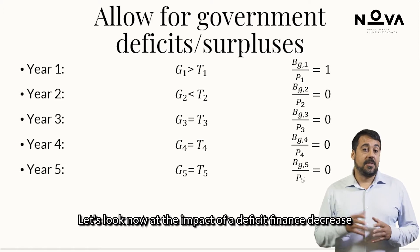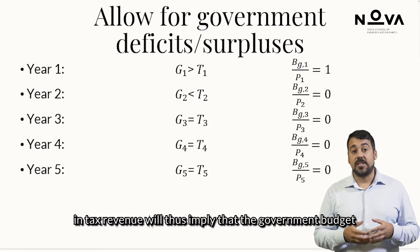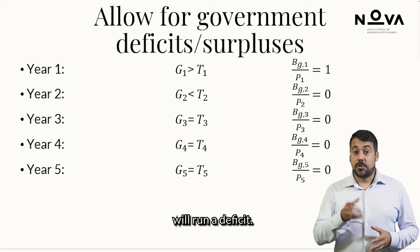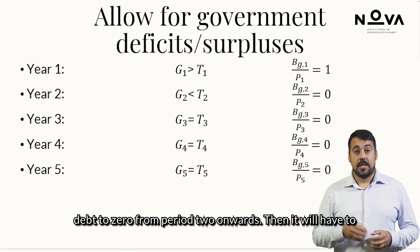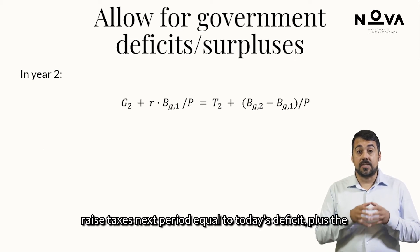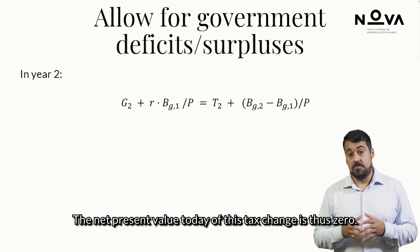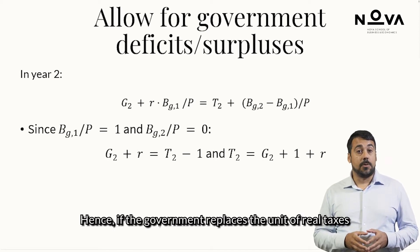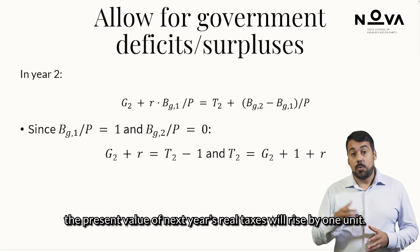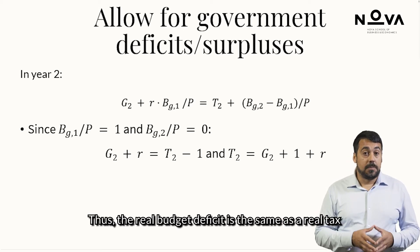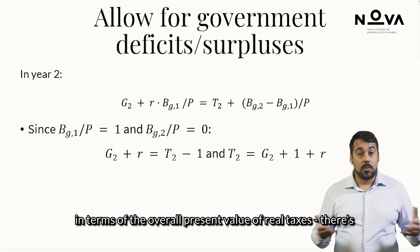Let's look at the impact of a deficit-financed decrease in taxes. Assuming a constant expenditure path, a decrease in tax revenue will imply that the government budget runs a deficit. If the government decides to restore government debt to zero from period two onwards, it will have to raise taxes next period equal to today's deficit plus the amount due in interest. The net present value today of this tax change is thus zero. Hence, if the government replaces a unit of real taxes with a unit of real budget deficit, households know that the present value of next year's real taxes will rise by one unit — so the real budget deficit is equivalent to a real tax in terms of overall present value, and there is no income effect on households.